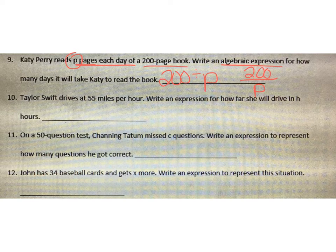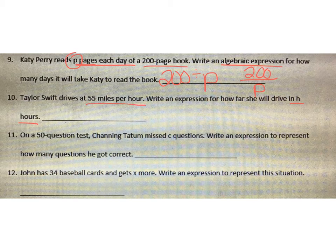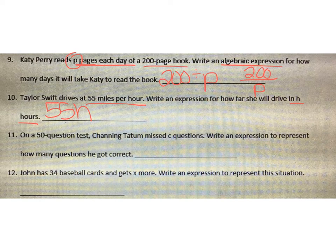Taylor Swift drives 55 miles per hour. Write an expression for how far she will drive in H hours. Underlining H hours and 55 miles per hour — it's going to be 55 times the number of hours, so 55H. Try the next two, then come back and watch the video to check.